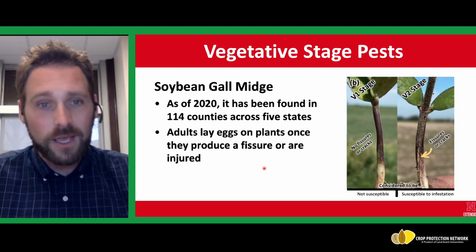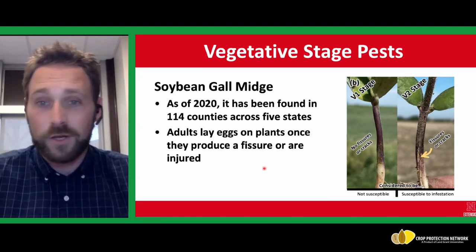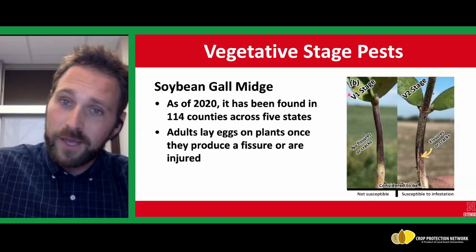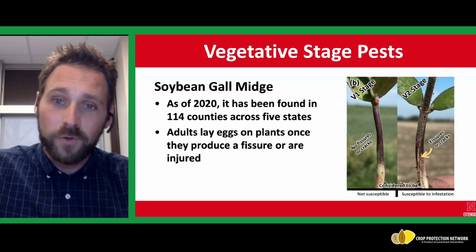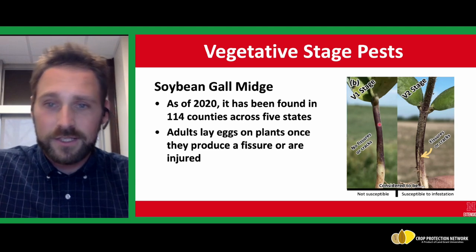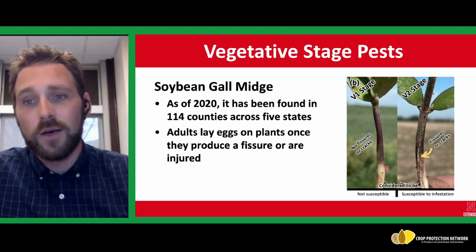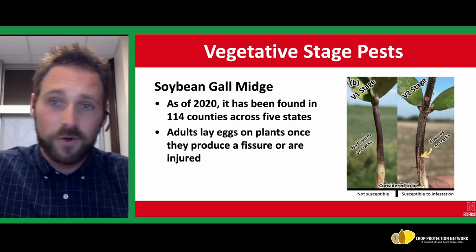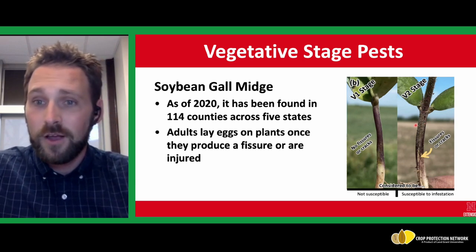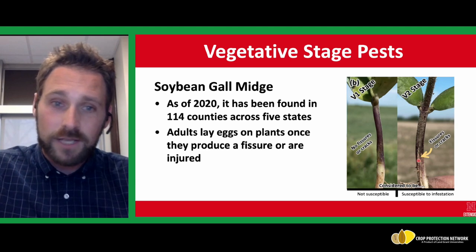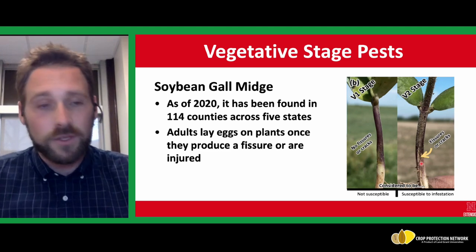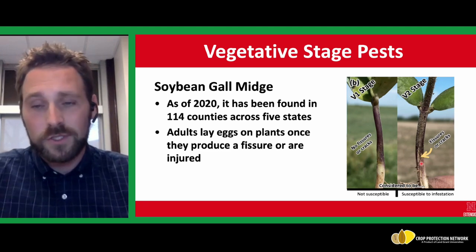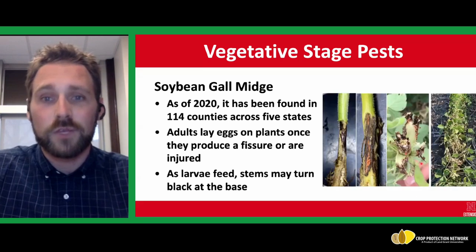The adults lay eggs on the plants once they produce a fissure or injury. This V1 stage plant has one trifoliate on it, and the picture at the base of the plant below the cotyledonary node is nice and smooth. Relative to this V2 stage plant — which occurs about five days later — it has fissures or cracks forming. That's where the adults lay their eggs into those fissures or cracks. They can't break through tissue, but they do lay them under those little fissures or cracks. So when you start to see those, that's when the plants become susceptible to infestation.